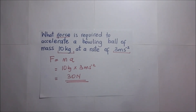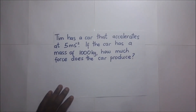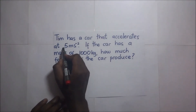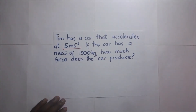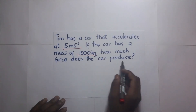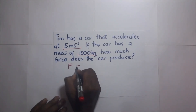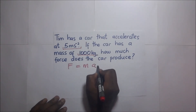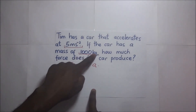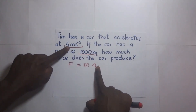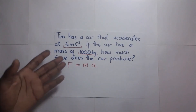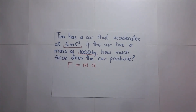Example 3: Tim has a car that accelerates at 5 meters per second squared. If the car has a mass of 1,000 kilograms, how much force does the car produce? Again, F = ma. Mass is 1,000 kilograms and acceleration is 5 meters per second squared. I will leave you to work that out for yourself.